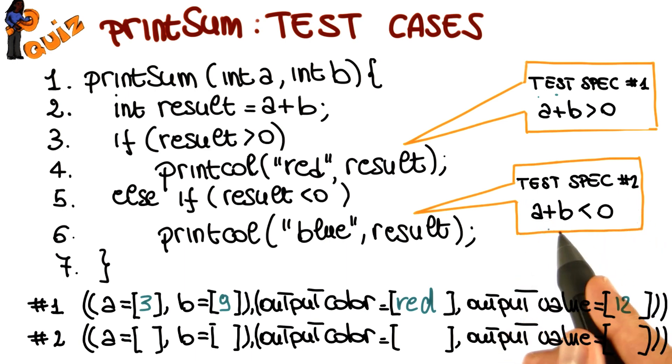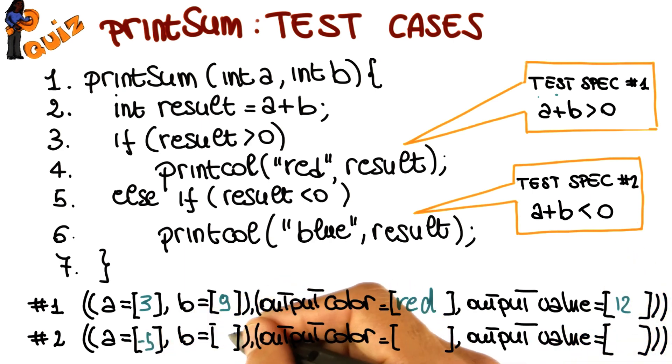Analogously for this test specification, we just need to pick two inputs such that the sum of the two inputs is less than 0. So for example, we could pick minus 5 and minus 8. The output color in this case is going to be blue, and the output value is going to be minus 13.